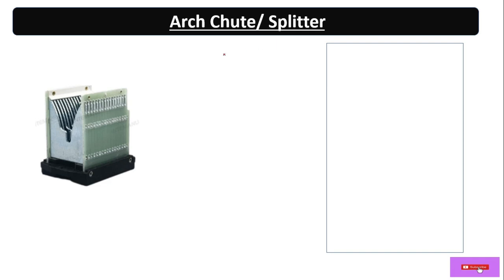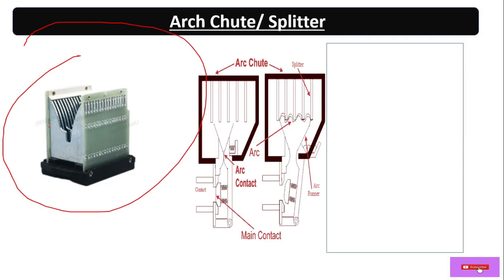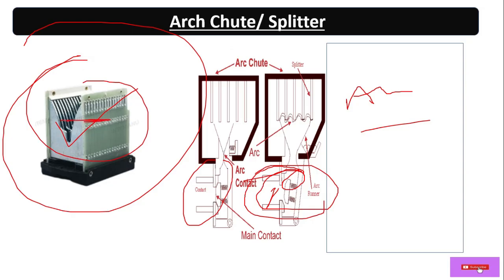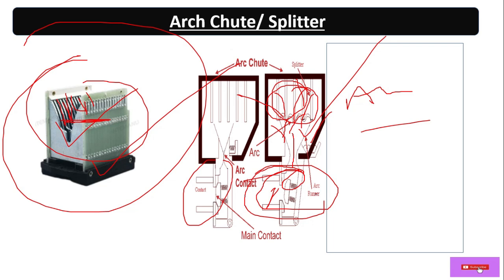The arc chute and arc splitter: during the opening of the circuit in case of any fault, when the contacts break, an arc is generated — basically fire is generated. ACB stands for Air Circuit Breaker, so air is the arc quenching medium. As you can see, these are metal plates — through the splitter the arc is divided, distributed, and extinguished. This is the arc chute which splits and extinguishes the arc.